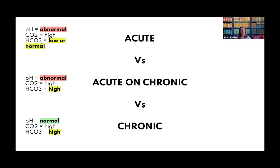For example, a 20-year-old who overdoses on fentanyl: pH of 7.0, CO2 of 70, and bicarb is normal — that's purely acute, the kidneys haven't had time to compensate. But a COPD patient who comes in with an abnormal pH, very high CO2, and bicarb in the fifties — that's acute on chronic. The high bicarb shows the kidneys have been working to compensate for chronic respiratory acidosis over time.